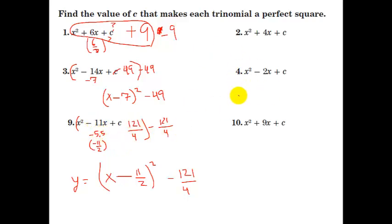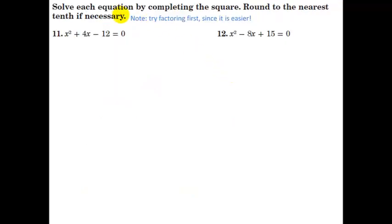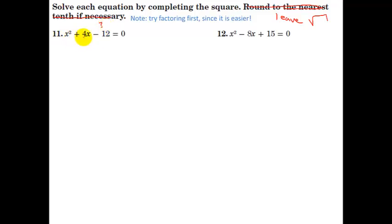In none of these examples did we have a leading coefficient. So let's do a couple more examples where we actually solve the entire equation. This negative 12 right here — let's ask ourselves what we would rather have. For x squared plus 4x, half the middle number here is 2, and 2 squared is 4. So instead of having negative 12 right here, what I really would have wanted is a 4.